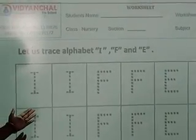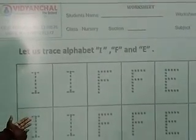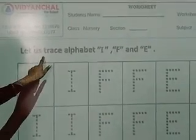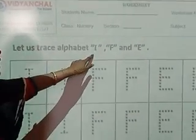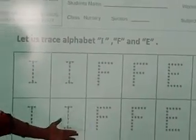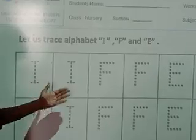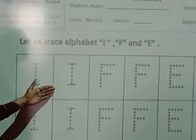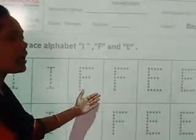See kids, this is your two days worksheet, okay? Now what do we have to do here? We are going to trace the alphabets I, F, and E, okay? In these boxes, we have dotted I, F, and E. Now we are going to trace them. Are you ready? Yes, very good.